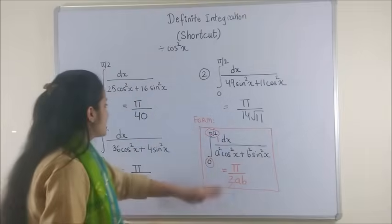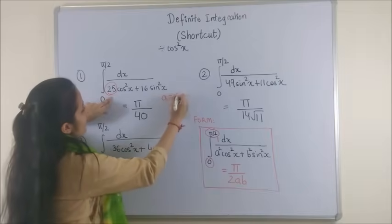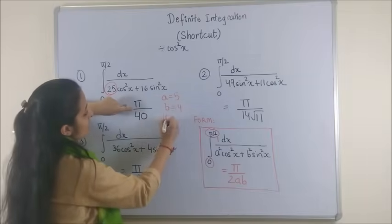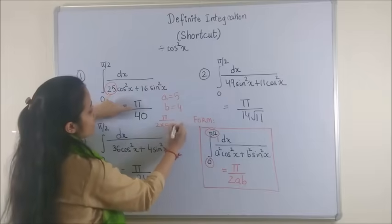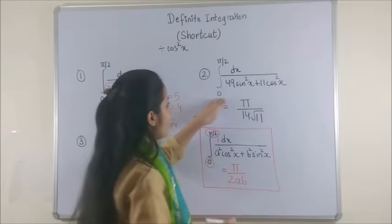Yes. So if we look at it... Now on comparing, your a would be 5 and your b would be 4. So pi upon 2 into a into b simply gives us the answer pi by 40. Look at this one here.